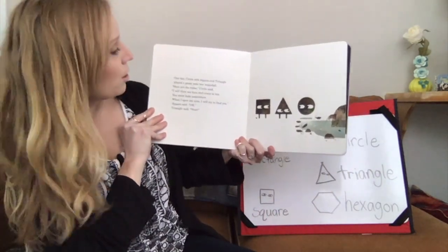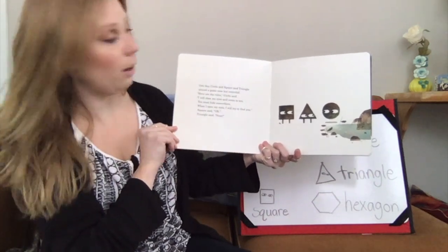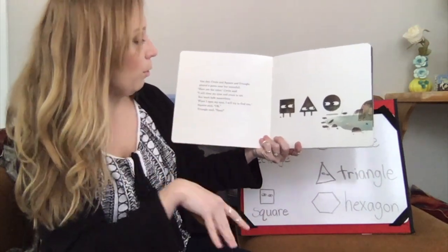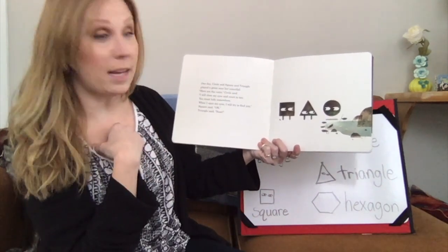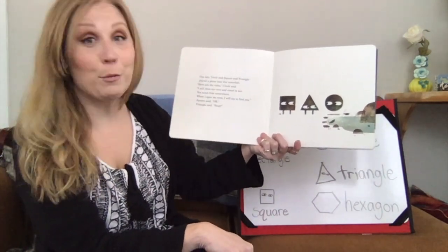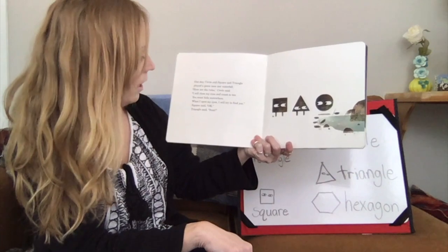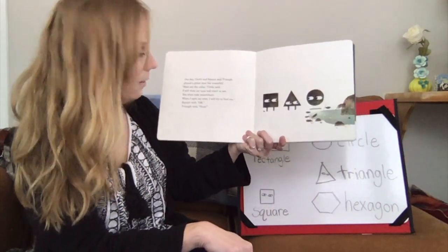This is Circle's waterfall. One day, Circle and Square and Triangle played a game near her waterfall. Here are the rules, Circle said. I will close my eyes and count to ten. You must hide somewhere. When I open my eyes, I will try to find you. Square said, okay. Triangle said, neat.